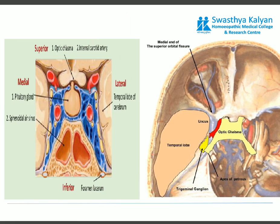The relations of the cavernous sinus are very important; it is in relation with many important structures. Superiorly, on the superior aspect, the cavernous sinus is related with the internal carotid artery, optic chiasma, and optic tract. On the medial side it is related with the hypophysis cerebri — that is the pituitary gland — and the sphenoidal sinus.